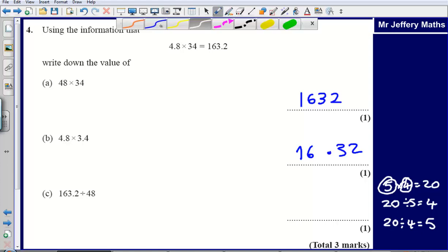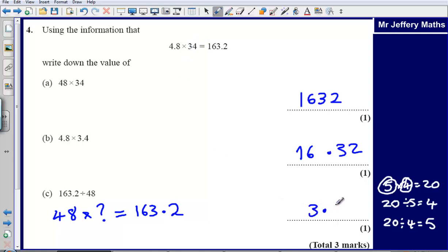Now what we could then say is that 163.2 divided by 48, that means that we've done 48 multiplied by a number, which we don't know, and that has given us 163.2. We know it's going to involve the digits 3 and 4. So 48 multiplied by something has given us the answer 163.2. Well, what we can see here is that this part here has been multiplied by 10 to give us 48, but that means that to get the same answer as 163.2, this part here, 34, must have been divided by 10. So it must be 3.4.